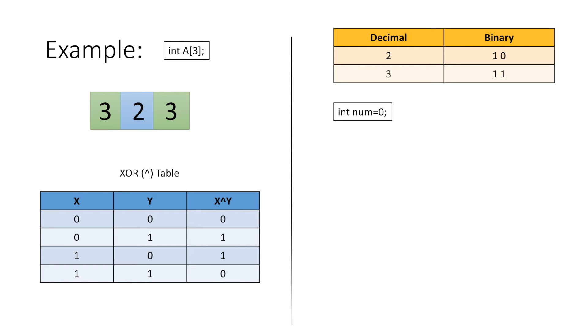Firstly we will take an integer variable num and equate it to 0. Next we will start traversing our array from the start and as we progress we will XOR each element with num.